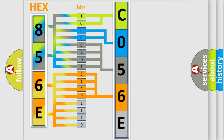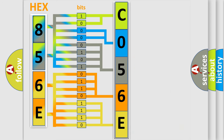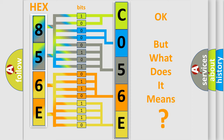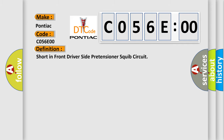A single byte conceals 256 possible combinations. We now know in what way the diagnostic tool translates the received information into a more comprehensible format. The number itself does not make sense unless we can assign meaning to what it actually expresses. So, what does the Diagnostic Trouble Code interpret specifically for Pontiac vehicles? The basic definition is: short in front driver side pretensioner squib circuit.